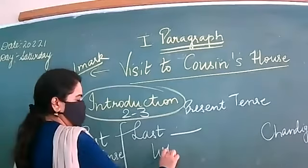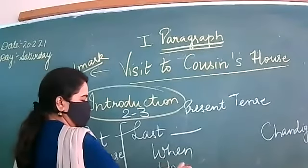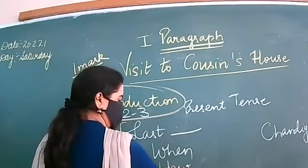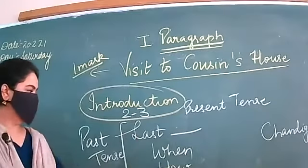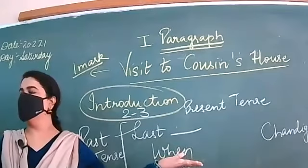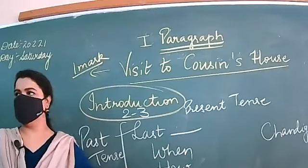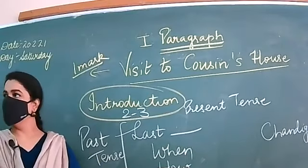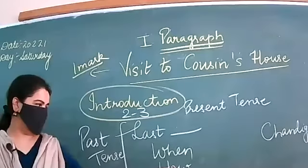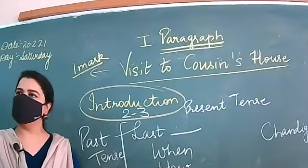Try to answer these questions: When did you go there? How? Who dropped you, or with whom did you go? Last Sunday my father decided to go to my cousin's house, who lives in Chandigarh or Delhi — anywhere. My whole family was with me. How did you get there? We booked our tickets or we went by car.